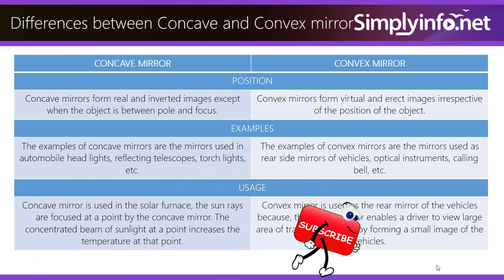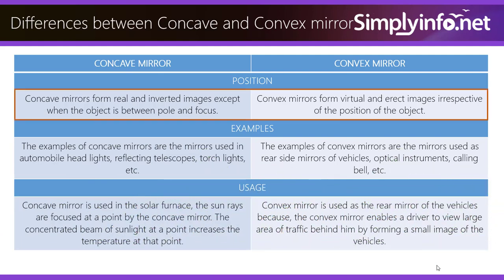Concave mirrors form real and inverted images except when the object is between pole and focus. Whereas convex mirrors form virtual and erect images irrespective of the position of the object.